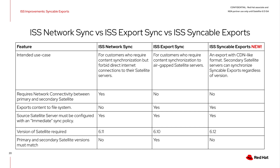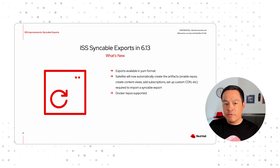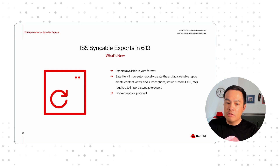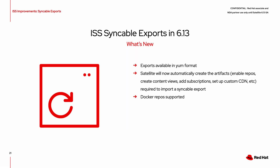In 6.13, we have several inter-satellite sync improvements. Syncable exports are different from ISS Export Sync in that they are available in YUM format. Previously, the ISS Export Sync would create exports in a PULP content format. This means that you can now host the syncable exports content over HTTP and synchronize a capsule with it. This method does not require that capsule and satellite servers run on the same version of software. In 6.13, Satellite will now automatically create satellite artifacts like content views and add subscriptions when importing the syncable export. Docker repositories are also now supported.